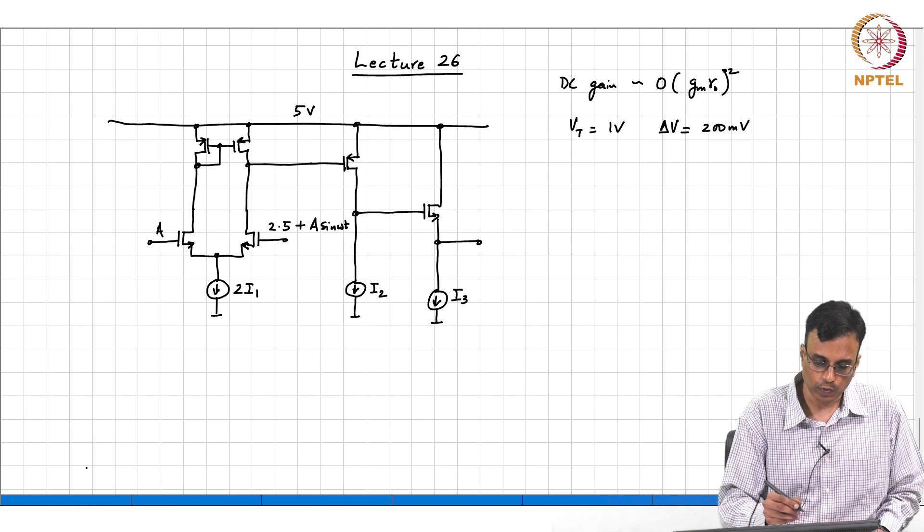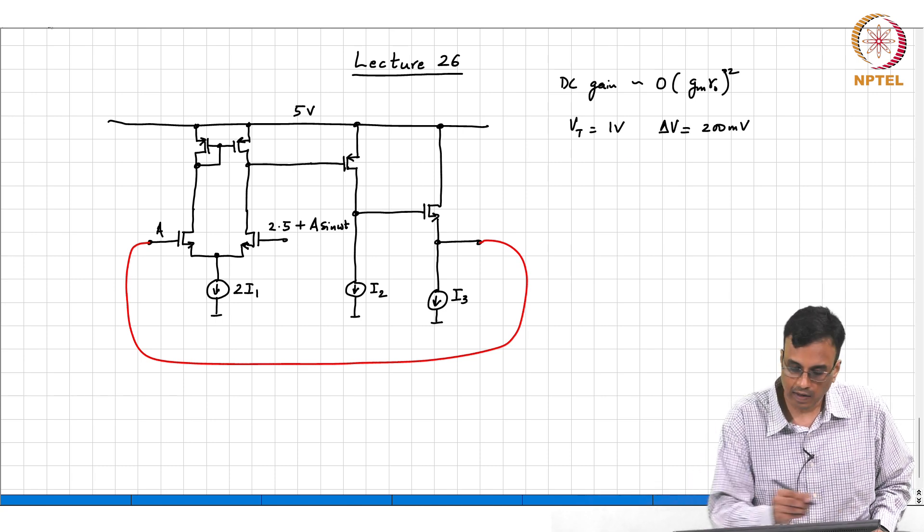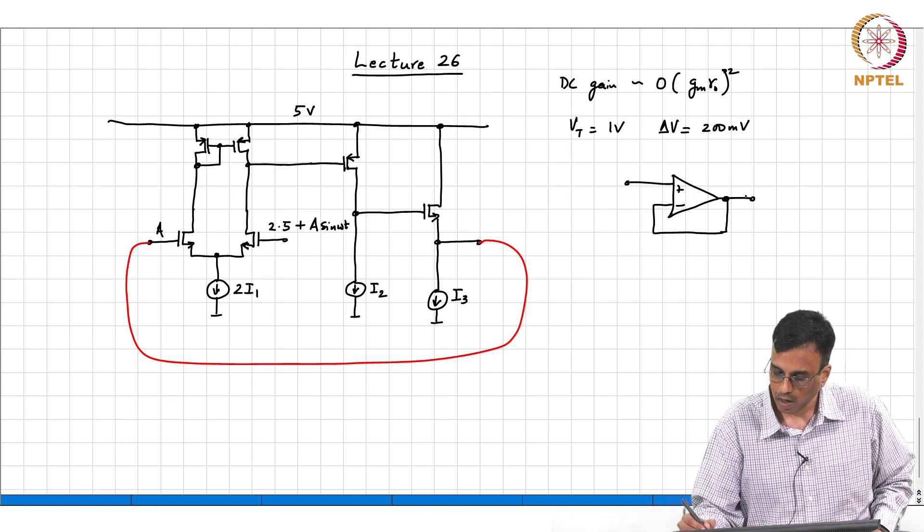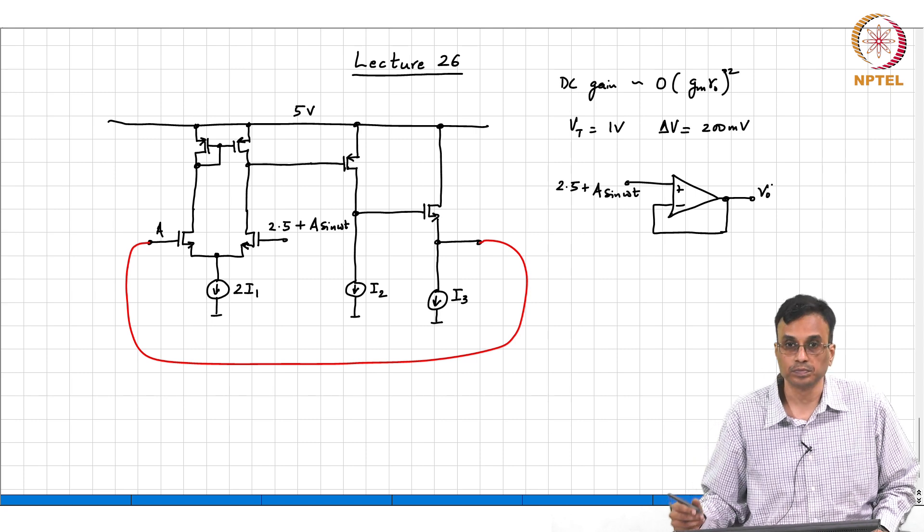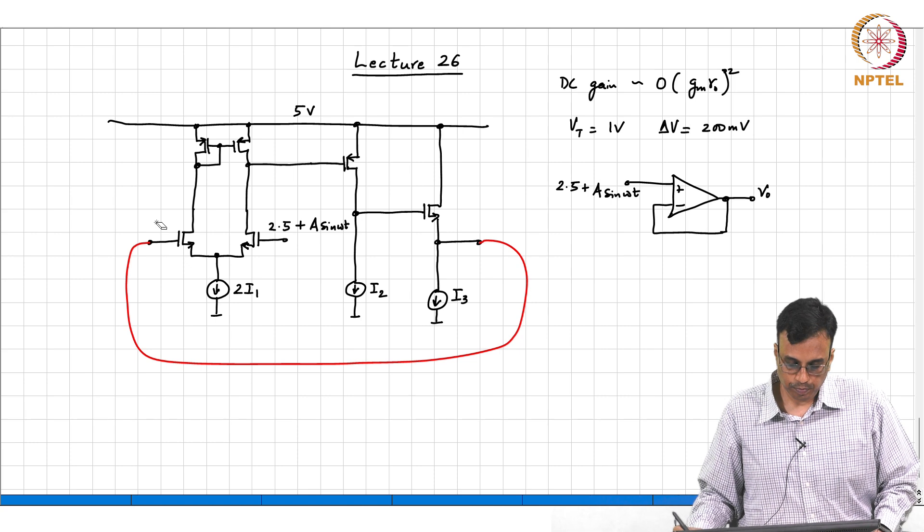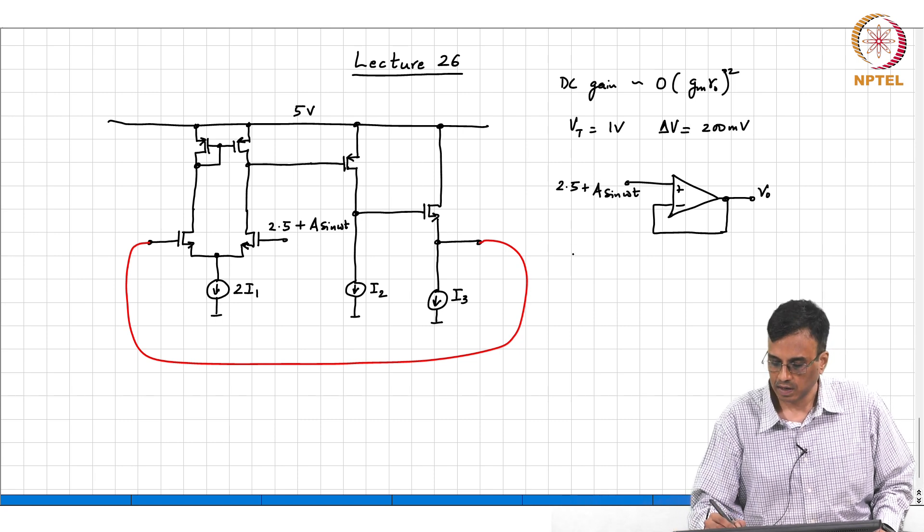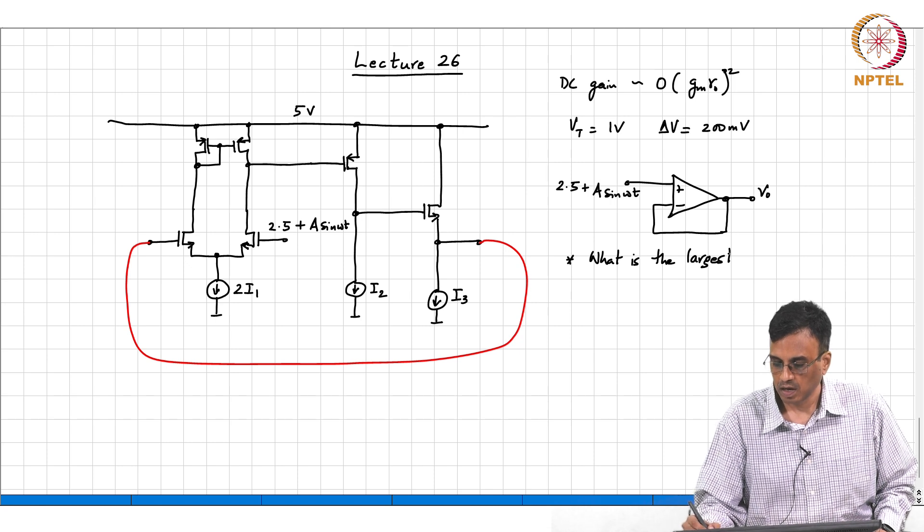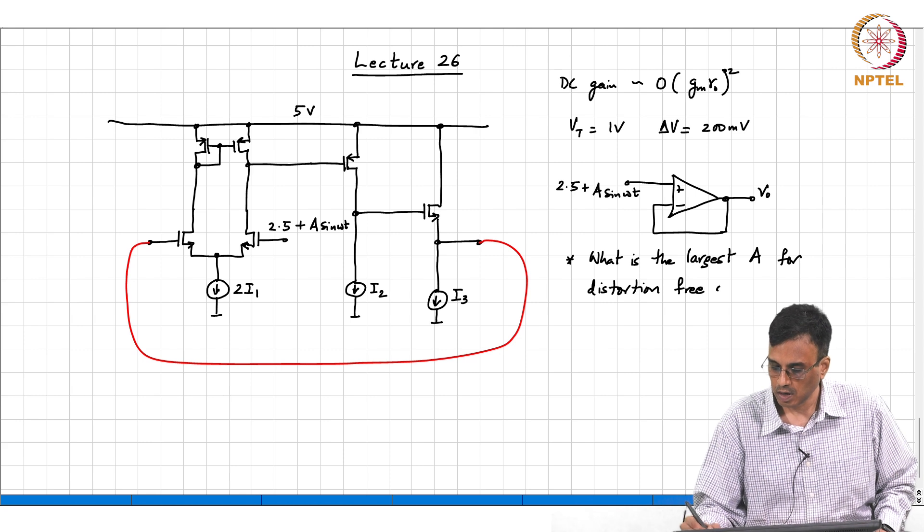And let us say we connect it up as a source follower. So, this is the feedback path. And so, what we have in essence is a unity gain buffer. So, this is 2.5 plus A sin omega t and this is V o. And now, the question that we are trying to ask is, what is the largest A for distortion free operation?